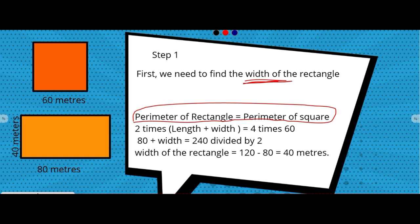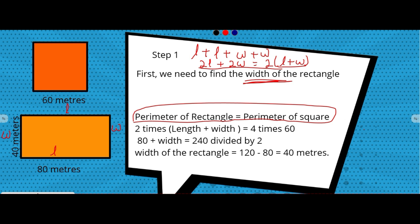Perimeter of the rectangle is the sum of its sides: L + L + W + W, which gives 2L + 2W, or 2 times (length plus width). Similarly for the square, since all 4 sides are equal, the perimeter is 4 times side. So perimeter of rectangle is 2(L + W) and perimeter of square is 4 × side.